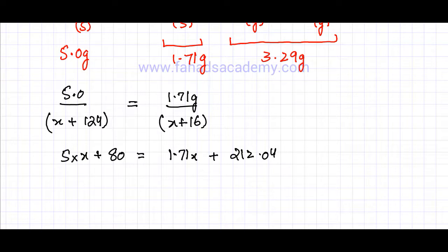And I'm going to try and solve for X now. So it's 5 minus 1.71, that would give me 3.29X. And on the other side it's going to be 212.04 minus 80, which gives me 132.04. Solving for X, I'm going to divide by 3.29.